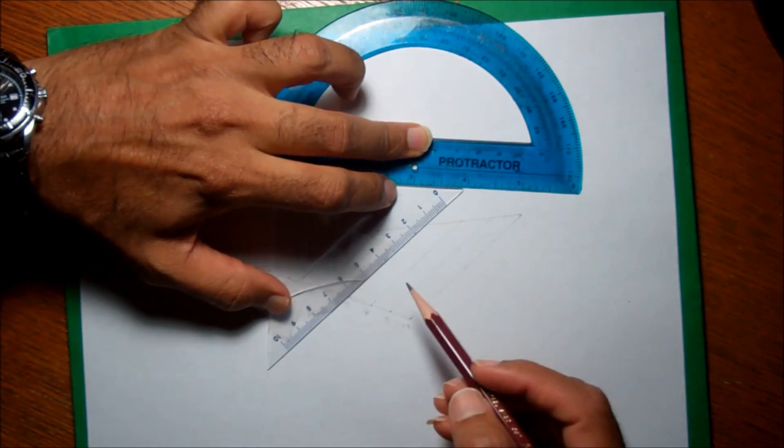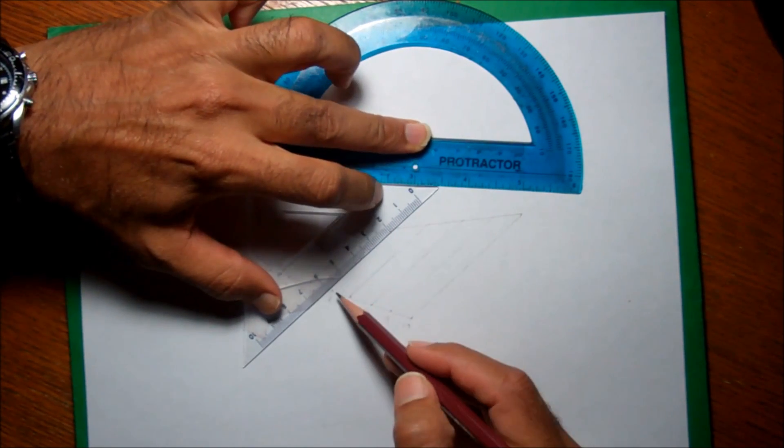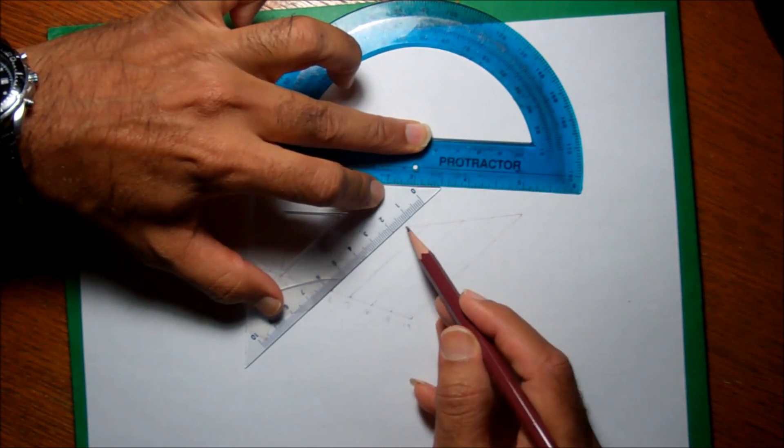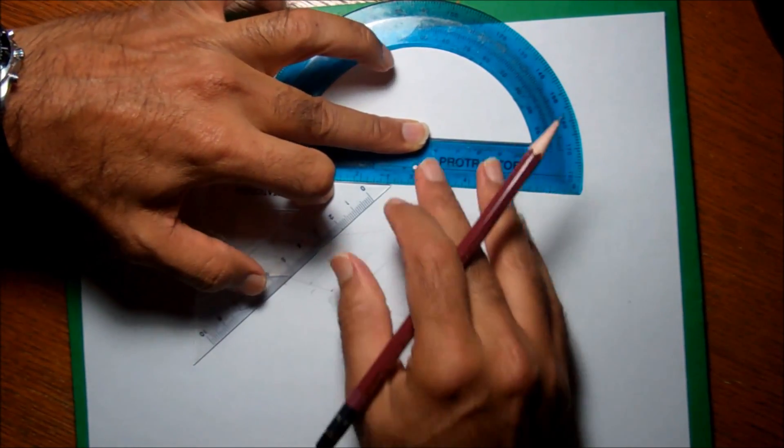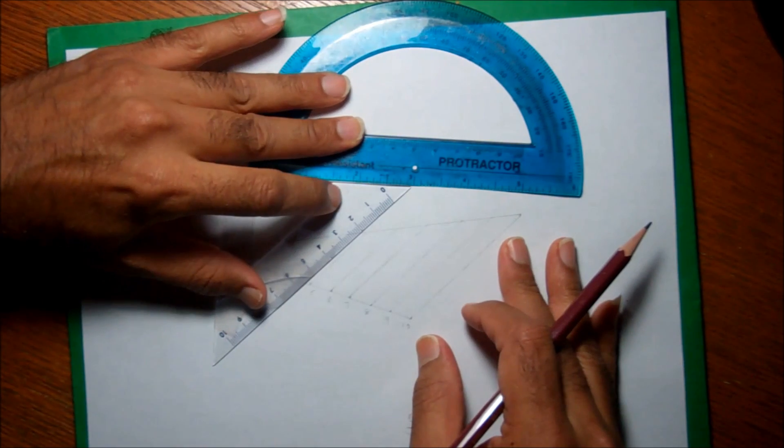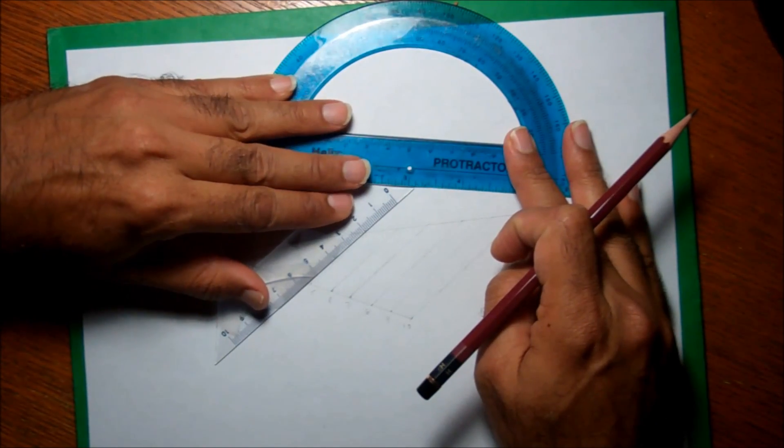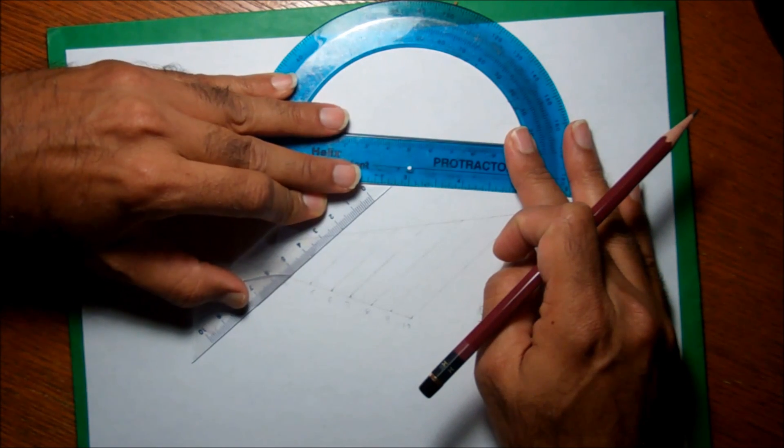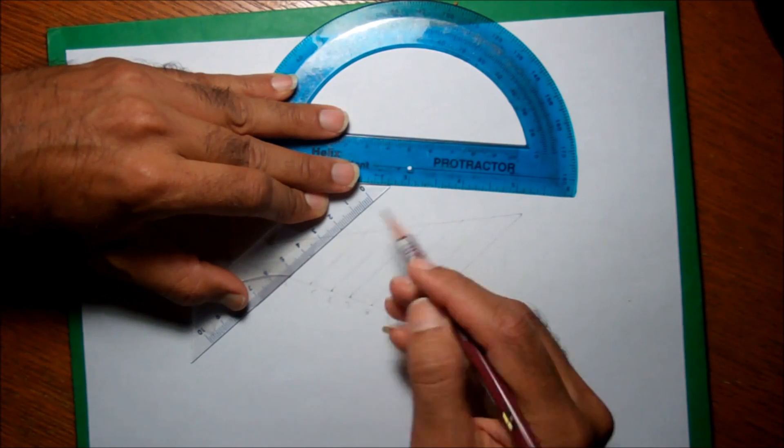And then again at 7 here, 6, and then again at 5. I'm using this one as a reference protractor. Okay, 4.